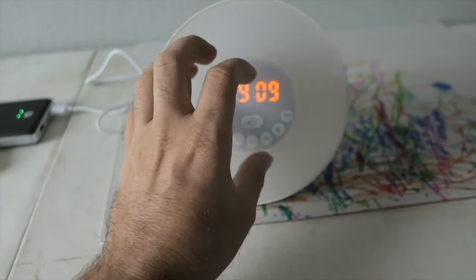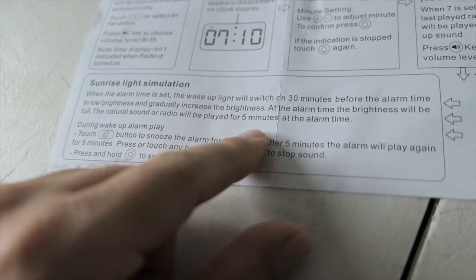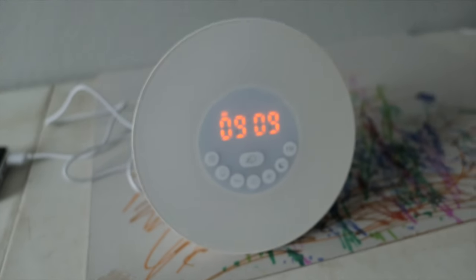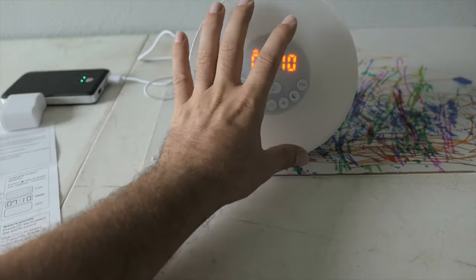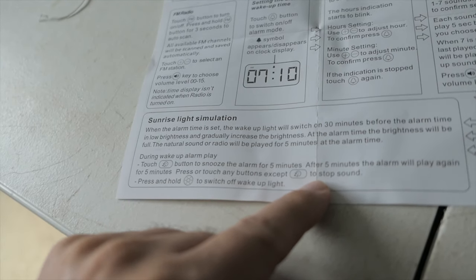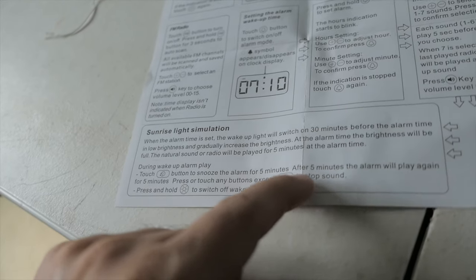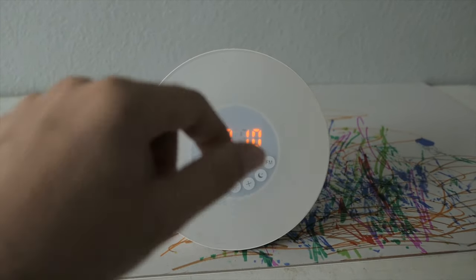All right guys, so here it says that 30 minutes before your alarm sounds, this light will gradually get brighter and brighter. So as it gets to the end, five minutes before the alarm plays, it'll be full brightness. So that's cool actually. It's gradually 30 minutes before your alarm this thing gets brighter. And then when you hit the snooze button, five minutes later it'll play the alarm to attempt to wake you up for five minutes after that.